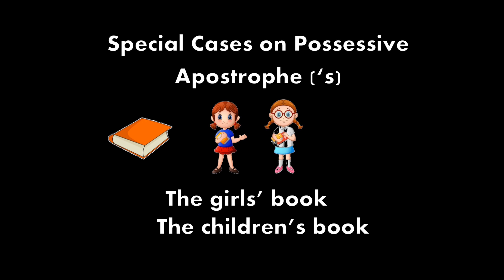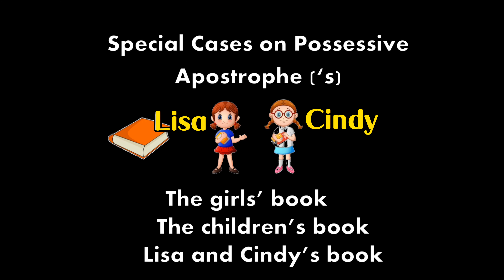Let's try another example. Now I'm not going to use 'children'. Instead, I'm going to call their names. So am I going to use apostrophe S or S apostrophe? I'm going to use apostrophe S — Lisa and Cindy's book.